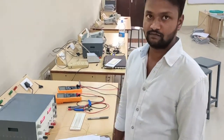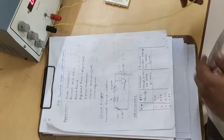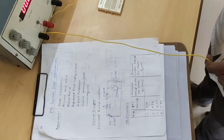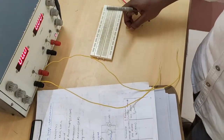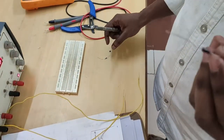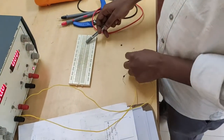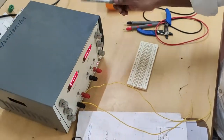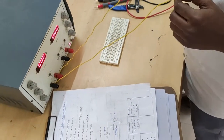Good morning students. Today we are going to perform PN Junction Diode Characteristics. Required apparatus: Diode IN4007, Resistor 1kΩ, Breadboard, DRPS, and some connecting wires. These are the required components.